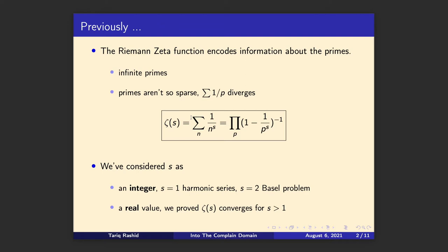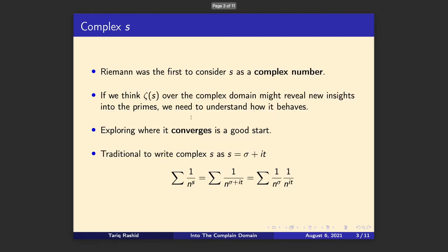The zeta function existed before Riemann — Euler developed this particular equation — but because Riemann did a lot of very interesting work in the complex domain, including the famous Riemann hypothesis, it's become known as the Riemann zeta function. If we think that looking at this zeta function over the complex domain might reveal new insights into the primes, the first thing we should do is understand what it looks like and how it behaves in different parts of the complex domain — in particular, where does it converge and where does it diverge?